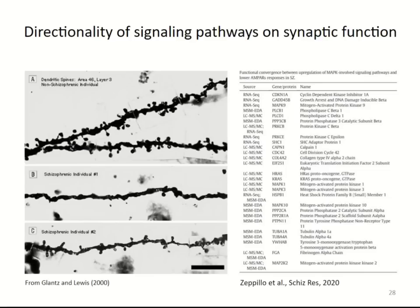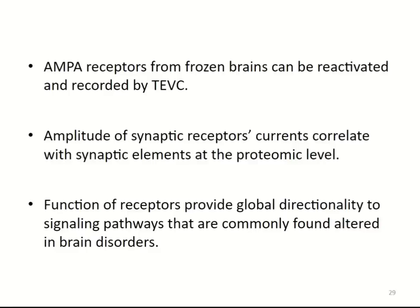Proteins up in schizophrenia are strongly correlated with proteins negatively associated with AMPA responses. One of the pathways strongly associated with schizophrenia is MAPK3, shown by many studies. The key difference here is that electrophysiology provides directionality: MAPK is increased, and that increase is correlated with reduced AMPA receptor responses. This tells us that AMPA receptors from frozen brains can be reactivated and recorded, the amplitude of synaptic receptor current correlates with synaptic elements at the proteomic level, and receptor function provides global directionality to signaling pathways commonly found altered in brain disorders.